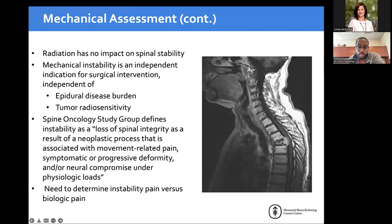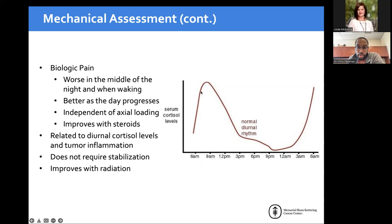This illustrates the diurnal cortisol rhythm: toward evenings and overnight you have lowest cortisol levels, and as you wake up in the morning cortisol rises. This correlates with biological pain — highest pain at night, lowest pain in the morning, correlating inversely with endogenous steroid levels.